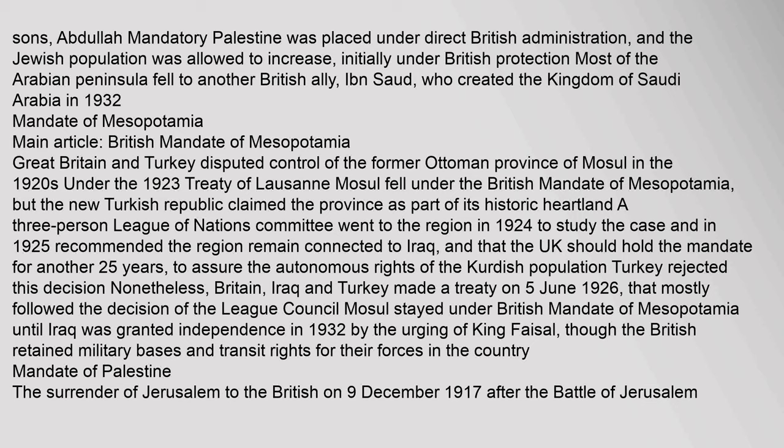Mandate of Mesopotamia: Great Britain and Turkey disputed control of the former Ottoman province of Mosul in the 1920s under the 1923 Treaty of Lausanne. Mosul fell under the British Mandate of Mesopotamia, but the new Turkish Republic claimed the province as part of its historic heartland. A three-person League of Nations committee went to the region in 1924 to study the case and in 1925 recommended the region remain connected to Iraq, and that the UK should hold the mandate for another 25 years to assure the autonomous rights of the Kurdish population. Turkey rejected this decision. Nonetheless, Britain, Iraq, and Turkey made a treaty on 5 June 1926 that mostly followed the decision of the League Council. Mosul remained under the British Mandate of Mesopotamia until Iraq was granted independence in 1932, though the British retained military bases and transit rights.